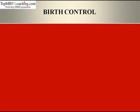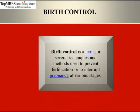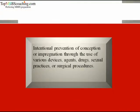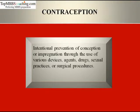In Reproductive Health, first comes birth control. Birth control is a regulation of the number of one's children through deliberate control of conception. It is a term for several techniques and methods used to prevent fertilization or to interrupt pregnancy at various stages — things that stop a woman or girl from becoming pregnant or giving birth. It is carried out by family planning or family welfare measures.